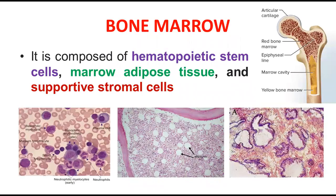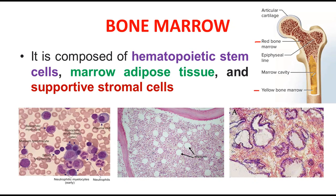The actual place where blood cells — white blood cells and red blood cells — evolve and come into being is the bone marrow. Bone marrow is a special type of substance present inside the bones of human beings. There are two types of bone marrow: red bone marrow and yellow bone marrow.